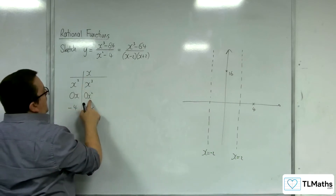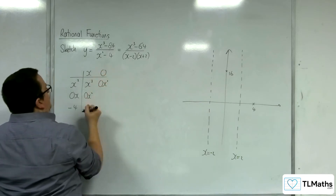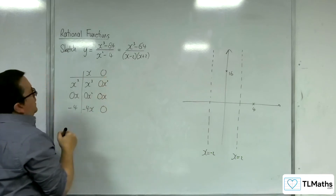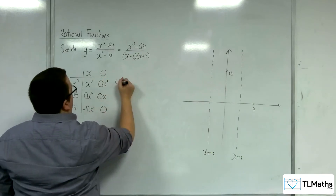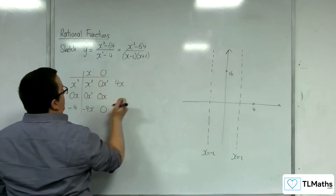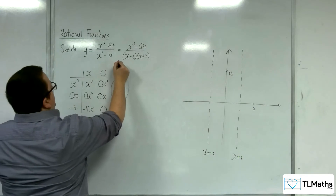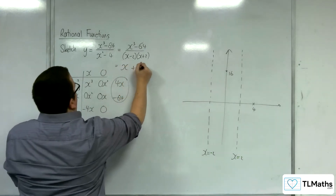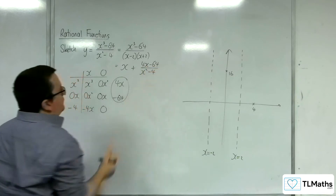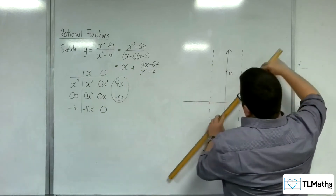We don't want any x squared so we'll have 0x squared, which gives 0. Then 0x and then 0. We don't want any x's, so that's going to have to be 4x. And we want minus 64, so we take away 64 — that's our remainder. So this equals x plus (4x − 64) over (x squared − 4), giving an oblique asymptote at y equals x.